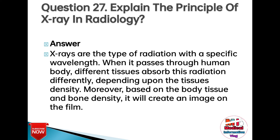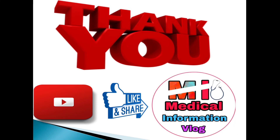Question 27: Explain the principle of X-ray in radiology. Answer: X-rays are a type of radiation with a specific wavelength. When they pass through the human body, different tissues absorb this radiation differently depending upon the tissue's density. Based on the body tissue and bone density, it creates an image on the film. I hope this video will be helpful for all of you.